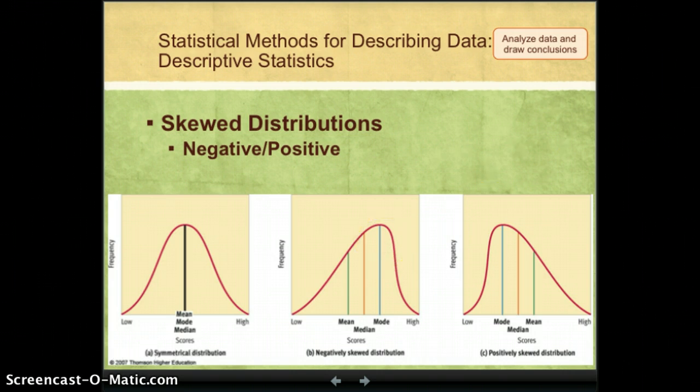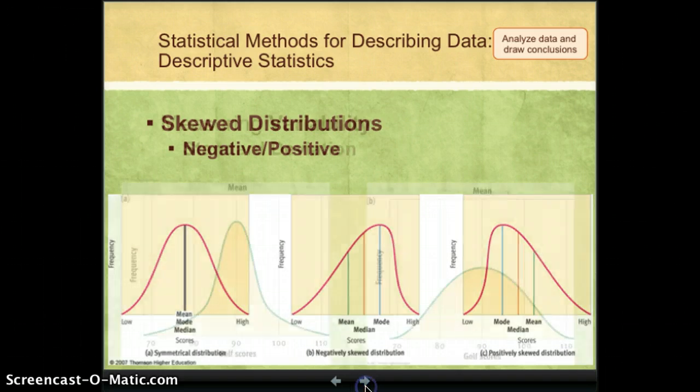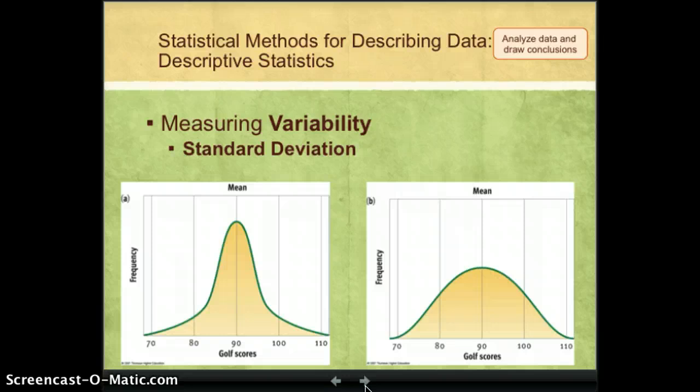So we have measures of central tendency. We also have determination of skewness. There's another thing that we will look at with describing data. And that has to do with variability. So were the scores all about the same score? Or was there a lot of variability in the class?